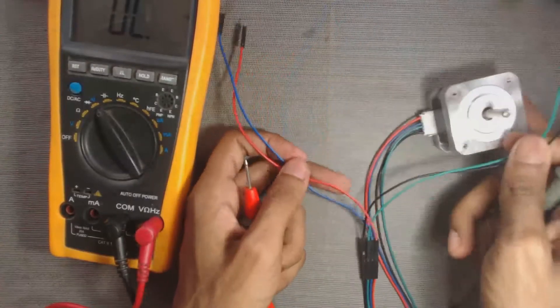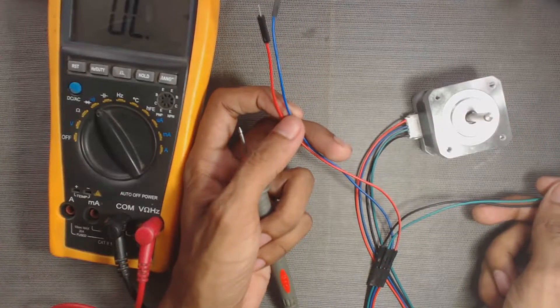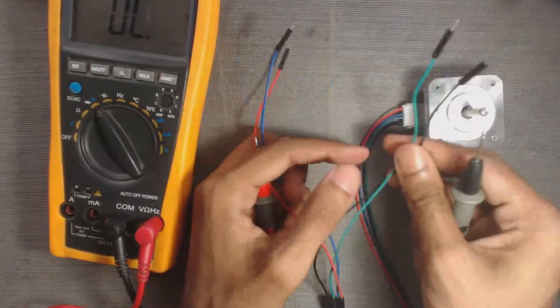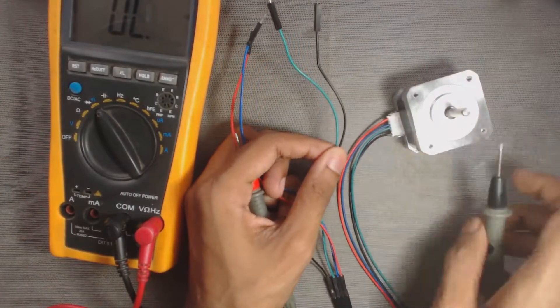So in this motor, red and blue are from one coil, and green and black are from the other coil.